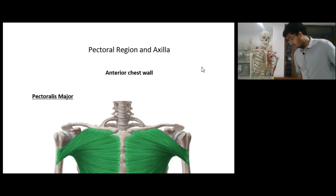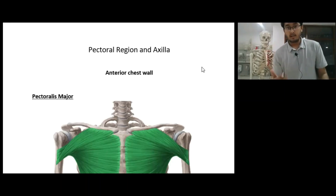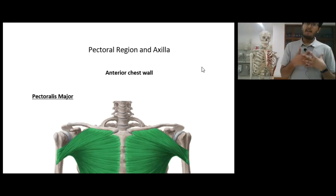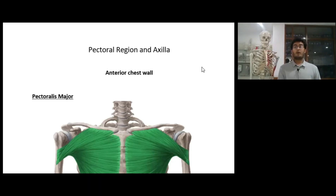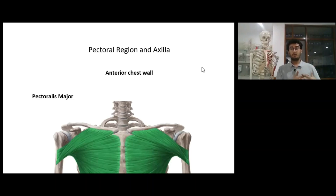Most commonly, the most important structure is the brachial plexus. So we'll be starting the lecture. Before we come on to the axilla, it's really important to study about the pectoral region because that forms the anterior wall, the anterior boundary of the axilla. We can't really know about the axilla if we don't study about the pectoral region.